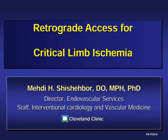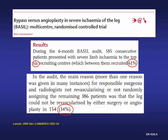To answer this question, I went to the only trial that has evaluated endovascular versus surgery in patients with critical limb ischemia — the BASIL trial. In the BASIL trial, there were 585 patients included. Of those 585, 61% came from six recruiting centers. However, 386 patients were excluded right off the bat because the interventionalist and surgeon felt there were no options for the patient — losing about 60% of patients with no option available.